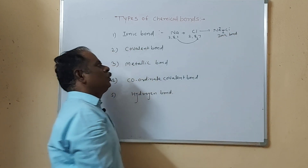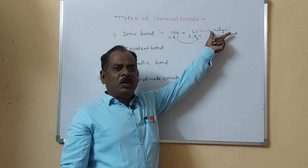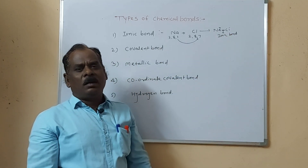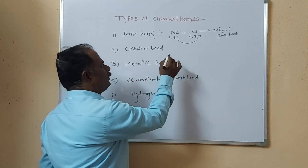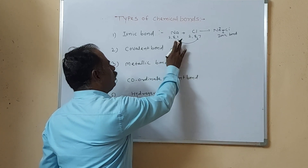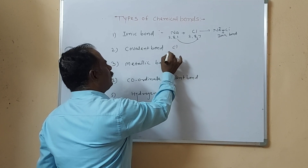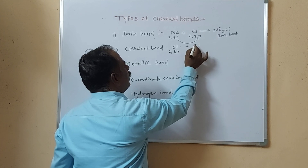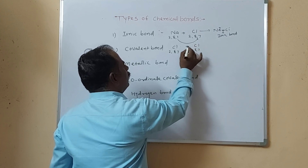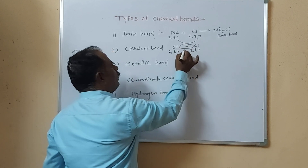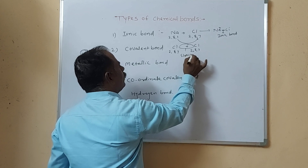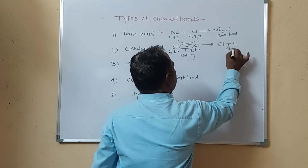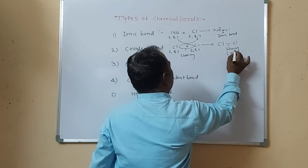This is the ionic bond — the first bond type. For the covalent bond: chlorine is 17, 2, 8, 7 and has 1 unpaired electron. When each chlorine atom shares 1 electron with another chlorine atom, and the electrons are shared, it is called a covalent bond.